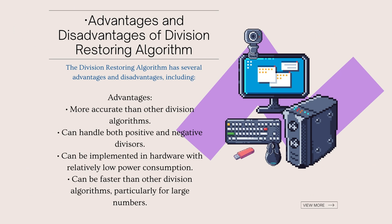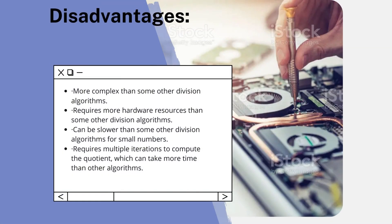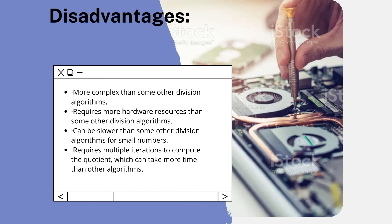Hello everyone, my name is Pratamesh, role number 16, from Division C, and I am going to tell you about the advantages and disadvantages of the Division Restoring Algorithm. Advantages include: it is more accurate than other division algorithms, can handle both positive and negative divisors, can be implemented in hardware with relatively low power consumption, and can be faster than other division algorithms particularly for large numbers. Disadvantages include: it is more complex than some other division algorithms, requires more hardware resources, can be slower for small numbers, and requires multiple iterations to compute the quotient which can take more time.